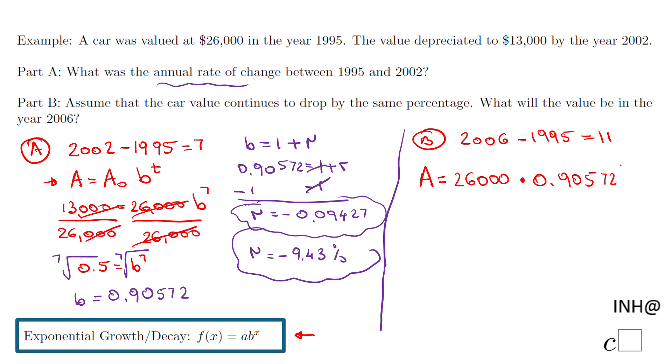To the 11th power. Okay, so I'm gonna raise to the 11th power and then times by 26,000. And I end up with this answer: A equals $8,748.35.